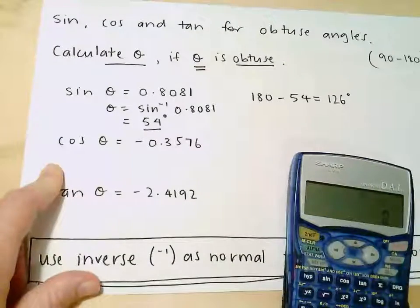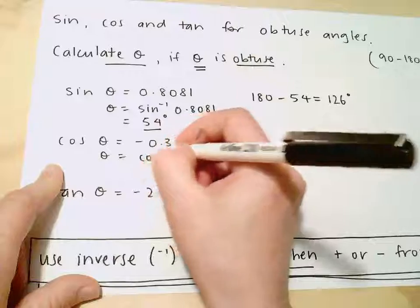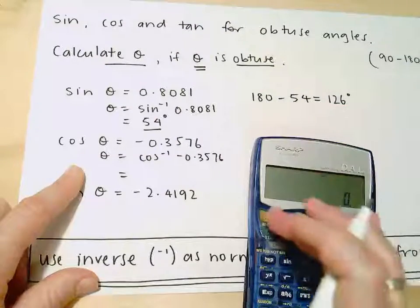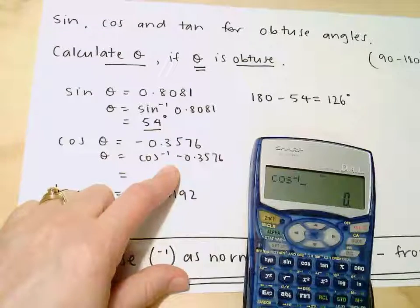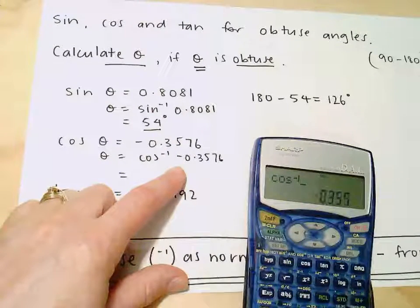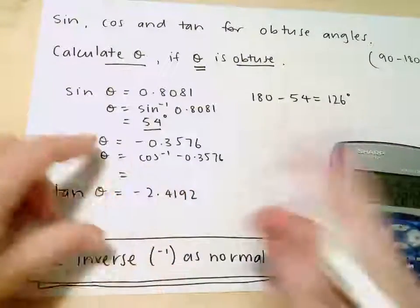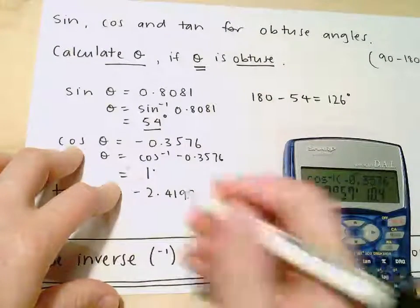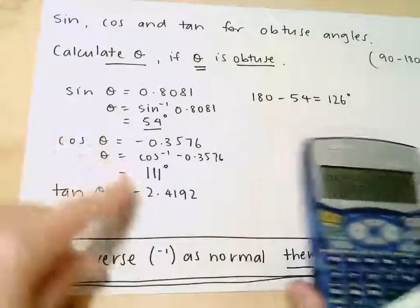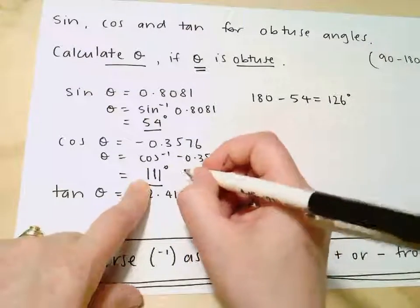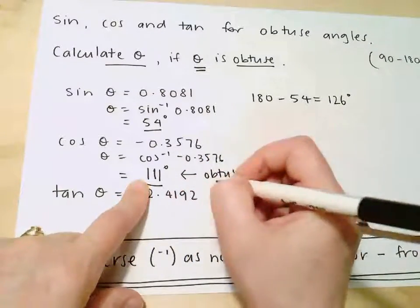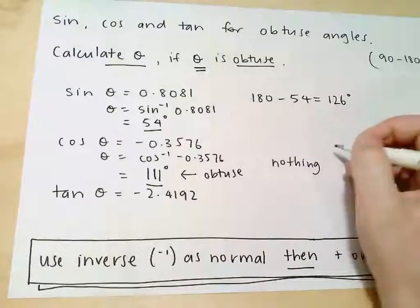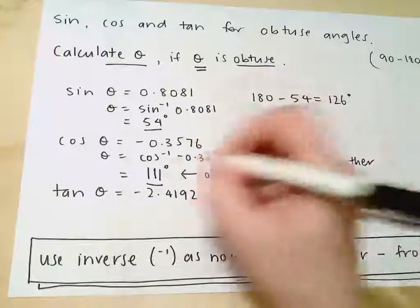For the cos example: inverse cos of negative 0.3576 on my calculator gives 110 degrees 57 minutes, which I round to 111 degrees. You can see that this time it has already given an obtuse angle directly. If I get an already obtuse angle, I don't need to do anything further — no need to add or subtract from 180.